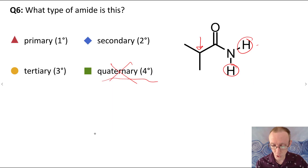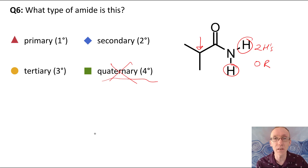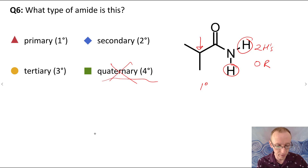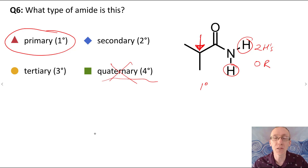In this case, we've got two hydrogens and zero carbon-based R groups. When we have that arrangement with zero R groups, we call that a primary amide. So the answer here is primary. It doesn't matter what is happening in the R group — that's not how we classify the amide in terms of primary, secondary, or tertiary.